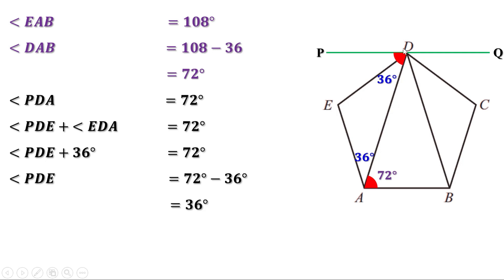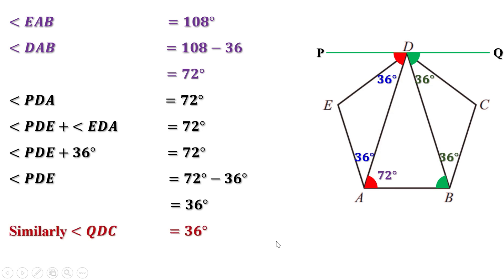Similarly, AB and PQ are a pair of parallel lines, and the line BD is intersecting them. Therefore, these two are a pair of alternate angles and they are equal. We have already seen that angle DBC is 36 degrees, so the alternate angle is 72 degrees. Since angle QDC contains angle CDB which is 36 degrees, angle QDC is also equal to 36 degrees.